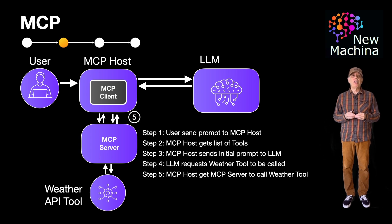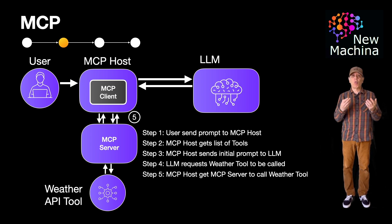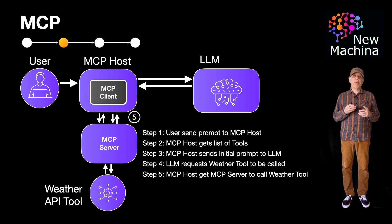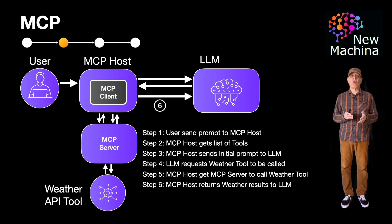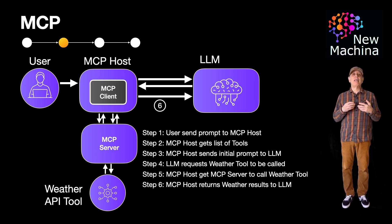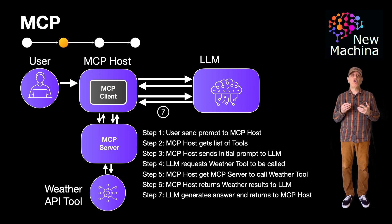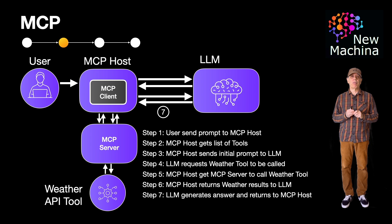In step five, the MCP host forwards the tool execution request to the MCP server. The MCP server does the actual work and calls the actual weather tool with the parameter of Austin. At this point, the MCP server gets back the actual weather tool response, and next the MCP server replies back to the MCP host with the actual weather tool results. Now in step six, the MCP host sends the results of the tool call back to the LLM in this second round of interaction. In step seven, the LLM receives the tool results and generates a final human-readable response: it's currently 85 degrees Fahrenheit and partly cloudy in Austin. The LLM sends this natural language response back to the MCP host.